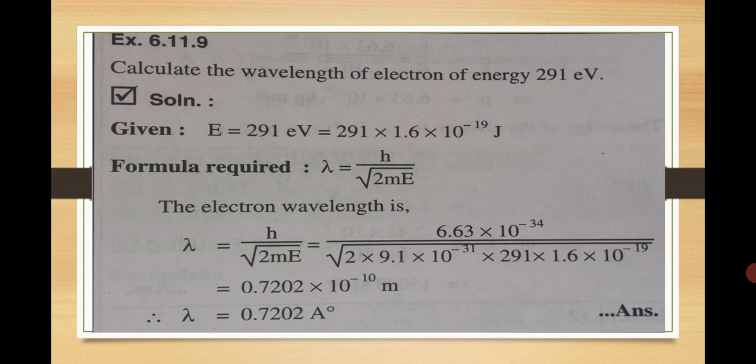According to de Broglie's hypothesis, lambda is equal to h upon mv. When we convert it into energy terms, the formula becomes lambda = h upon under root of twice m times e. Putting in values: h = 6.63 × 10⁻³⁴, mass of electron = 9.1 × 10⁻³¹, and energy = 291 × 1.6 × 10⁻¹⁹ joules. After calculation, we get 0.720 × 10⁻¹⁰, and if we convert it to angstroms, it is 0.720 angstrom.